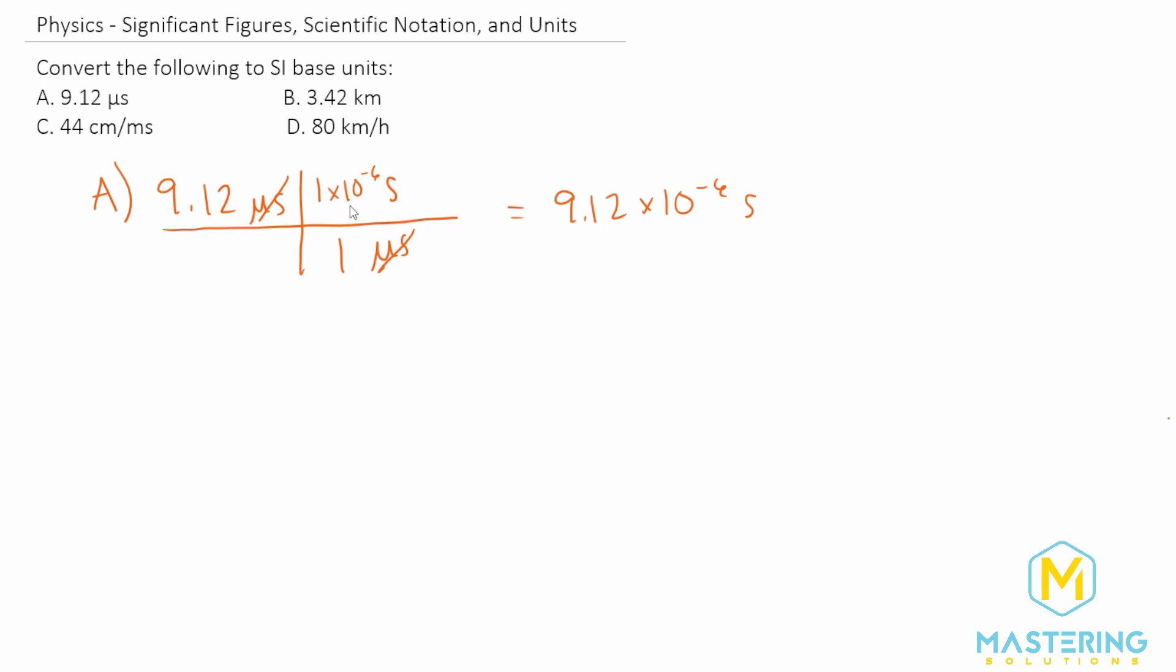So we're going to have 9.12 times 10 to the negative 6 seconds. So now if you look at that, all we did is we just replaced the micro with 10 to the negative 6. So going forward, whenever we have ones like this, we can just simply understand what micro means and replace it and that is now in standard units.